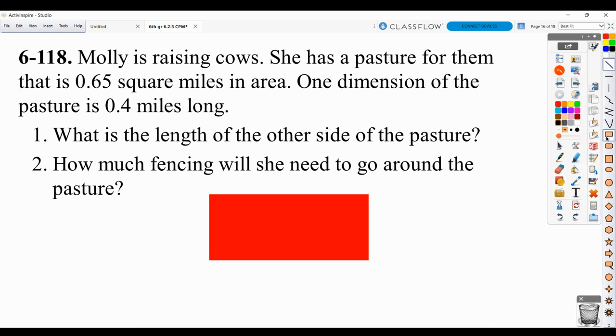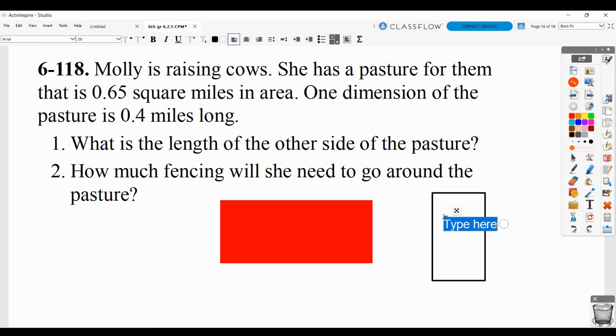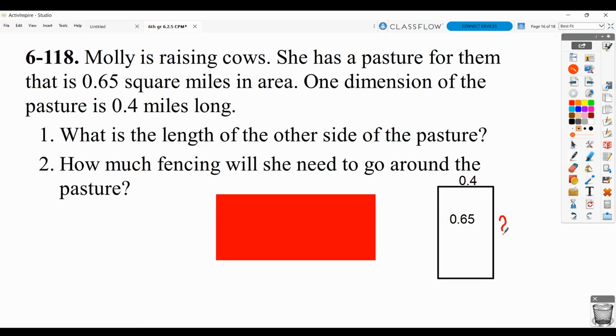So we basically know that if we have a rectangle, and we know the area of that rectangle, which in this case is 6,500 square miles, and we know one of the dimensions of the rectangle, 0.4, then the way to find the other dimension will be to divide.